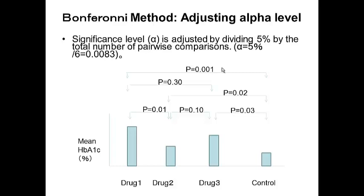You don't claim statistical significance unless your p-value is less than .05 divided by 6, which is .0083. By doing this, only one p-value remains significant. The result is the same whether you multiply the p-value by 6 or you adjust the alpha level by dividing by 6.